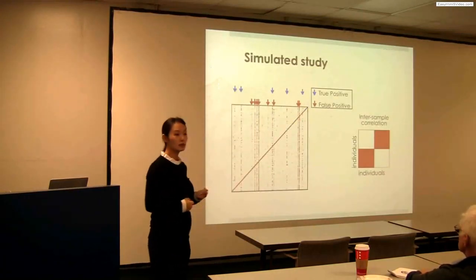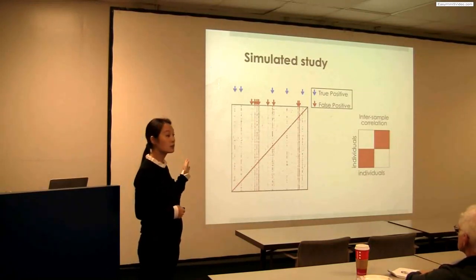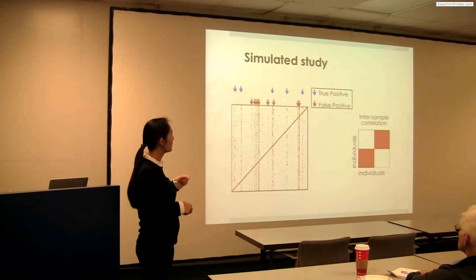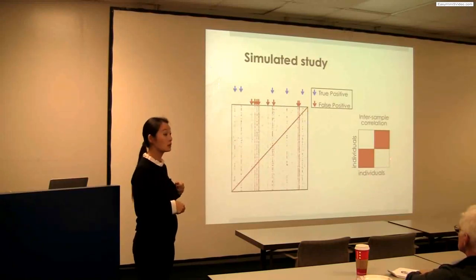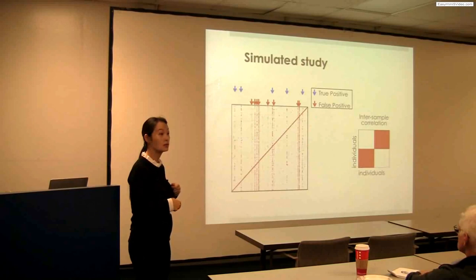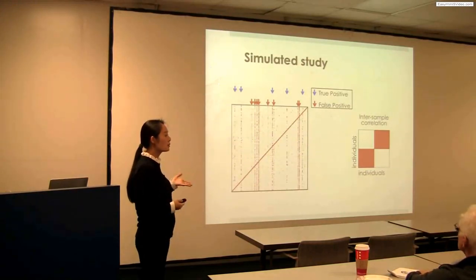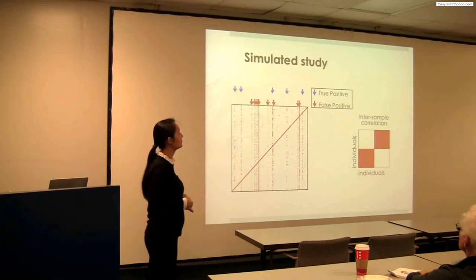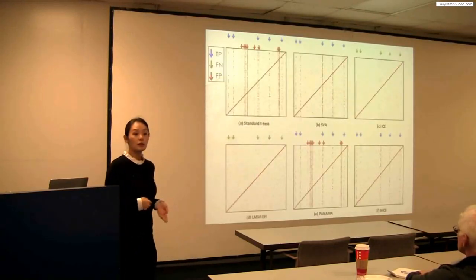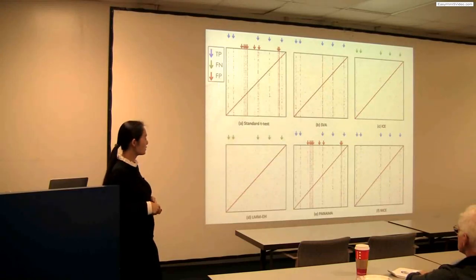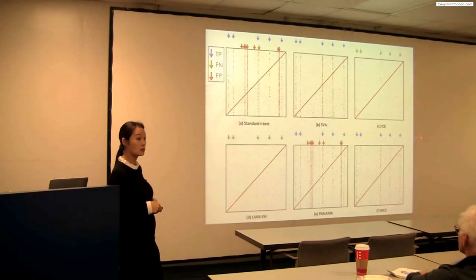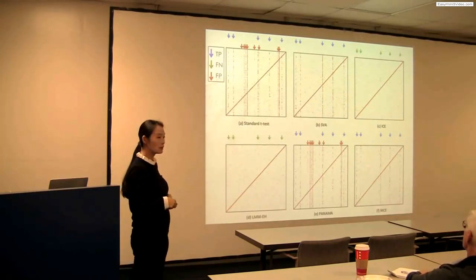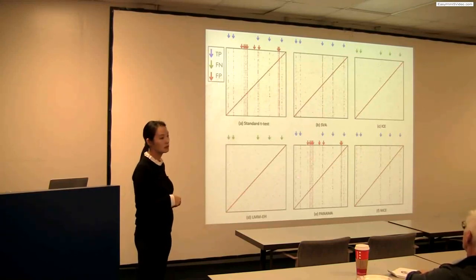We simulated data with five trans-regulatory hotspots implanted (shown in blue arrows) and one big batch effect which caused many spurious hotspots (shown in red arrows). We expect that when we apply our method, we only see blue arrows without the red ones. Applying different methods to this simulated data, NICE was able to capture all five trans-regulatory hotspots without any spurious ones. However, previous methods either failed to remove the confounding ones or removed all signals in the data. SVA worked reasonably well in the simulated study because it captures confounding effects based on PCA, and with only one big batch effect, PCA captures it — but SVA does not work in the real dataset, which has more complicated confounding effects.